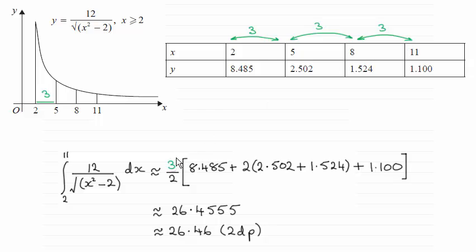So you take the width of a strip which is three, always divide it by two, and then you do the first height, which in this case is the y value when x equals two, which is 8.485.